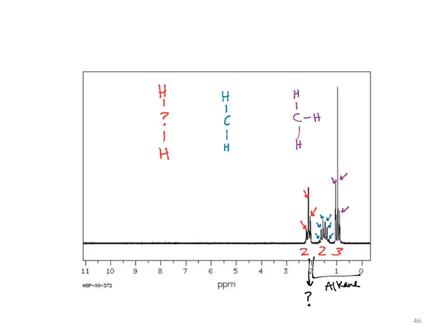With the splitting patterns, I would jump to the 3H signal because that's the end of my structure — I only have one direction to go. I have three peaks, which means two neighbors, which means that signal is next to a carbon with two hydrogens. I conveniently drew that next door. We now have two neighbors confirmed by the blue hydrogens.